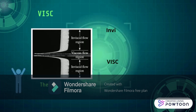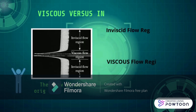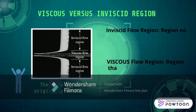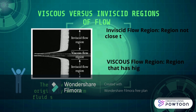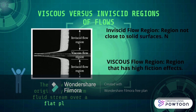Viscous versus inviscid regions of flow. The picture shows the flow of an originally uniform fluid stream over a flat plate, and the regions of viscous flow next to the plate on both sides, and inviscid flow away from the plate.